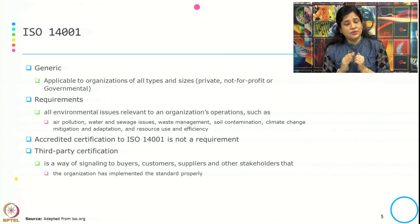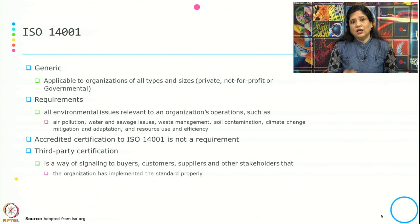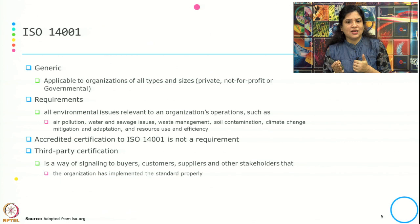The requirements needed for ISO 14001 cover all environmental issues relevant to an organization's operations that can come under the framework: air pollution, water and sewage issues, waste management, mitigation, adaptation, and resource use and efficiency. This can be very specific to each domain where there is an environmental impact associated with the product life cycle.